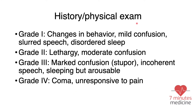There is a grading system for hepatic encephalopathy. Grade 1 is mild confusion and possibly slurred speech. Grade 2 involves more confusion and lethargy, and asterixis is positive. Grade 3 features confused and slurred speech and the patient is sleepy but still arousable. Grade 4 is coma, unresponsive to pain, and the patient should be intubated.